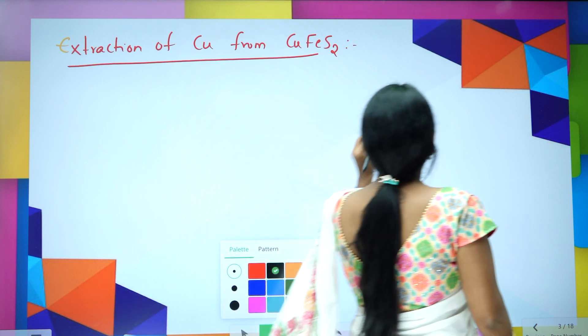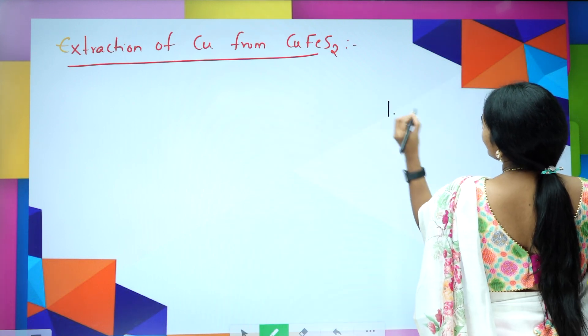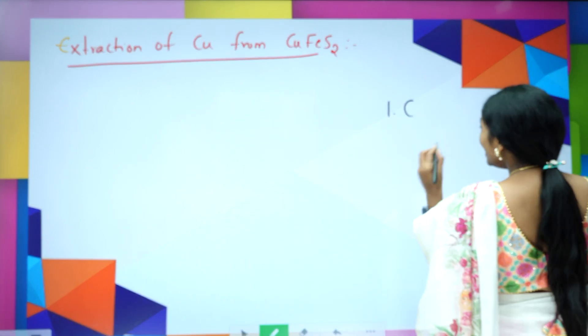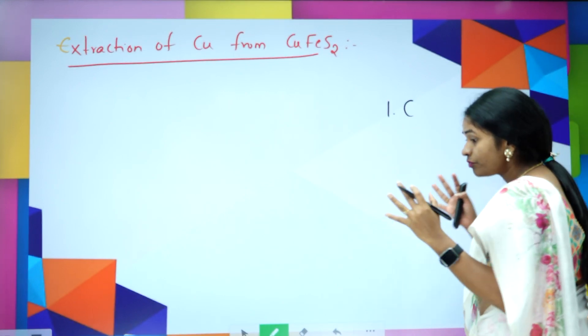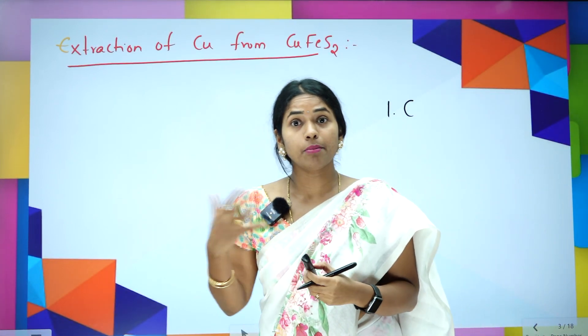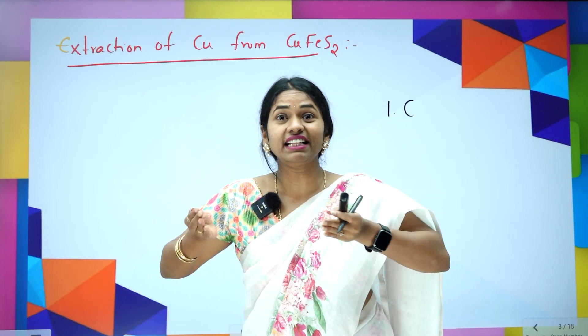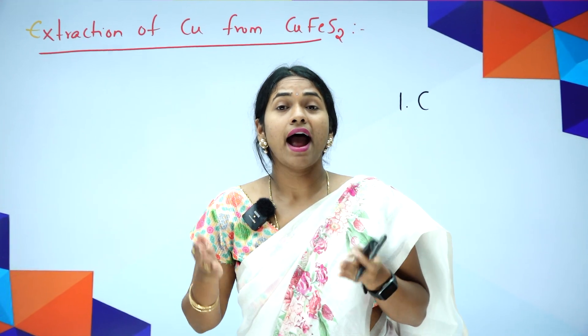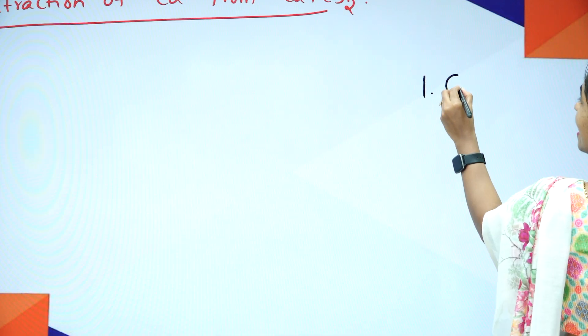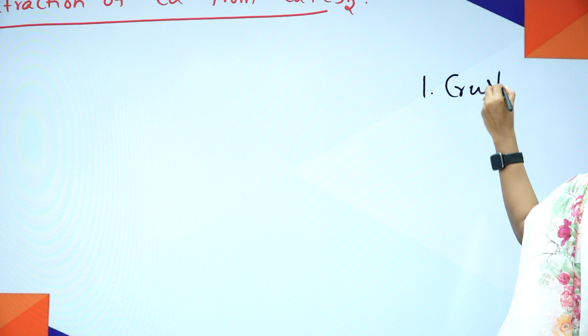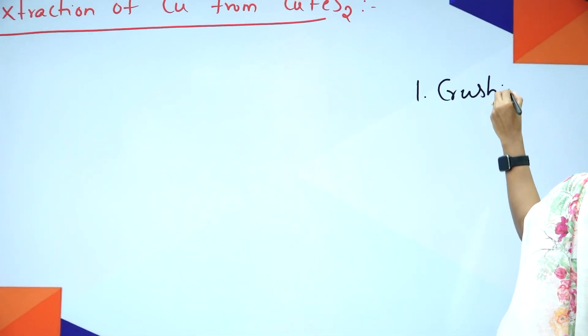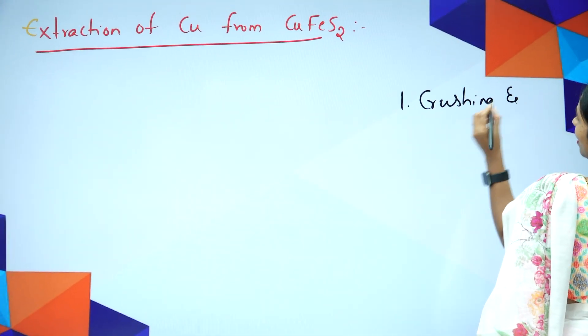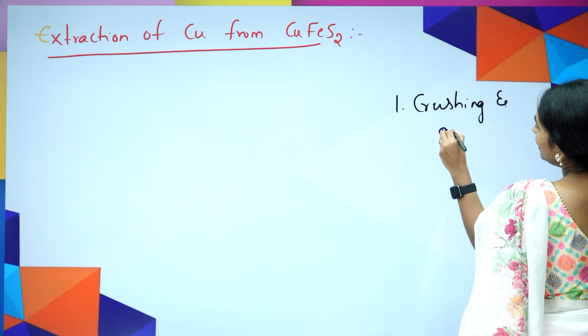What is the first one? First, we have to grind the ore. Whatever ore we get from the earth's crust, we take that ore and we have to grind and crush it to make it a fine powder. So the first step is crushing and grinding.